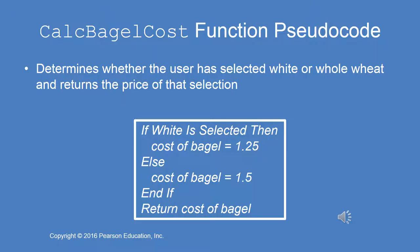Here is some pseudocode for the calc bagel cost function. You have two options: either a white or a whole wheat bagel. If white is selected, then the cost of the bagel equals $1.25. You'll need a local variable for cost of bagel that will be returned at the end. So you have an if-else statement that assigns the appropriate cost of the bagel depending on whether they selected white or whole wheat.